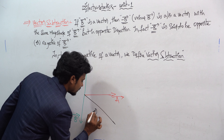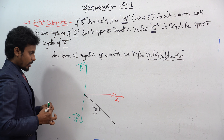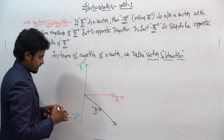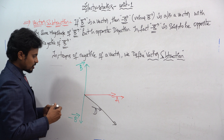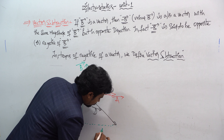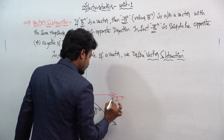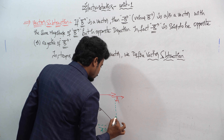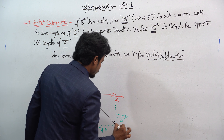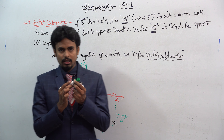Our resultant vector is denoted as d-bar. Next, what you have to do is take the mirror image — this is the mirror image for a-bar, and this is the mirror image for b-bar. So this is minus b-bar — the mirror image.